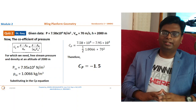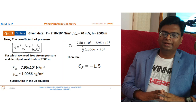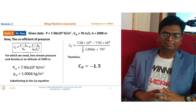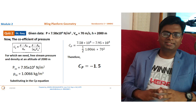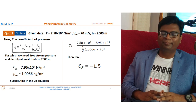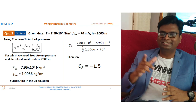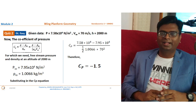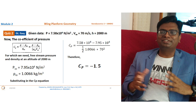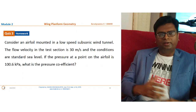The Cp value is −1.5, which is negative. This immediately tells us the point must be on the upper surface of the airfoil, for two reasons: first, Cp is negative; and second, the local pressure at that point is less than the free stream pressure.